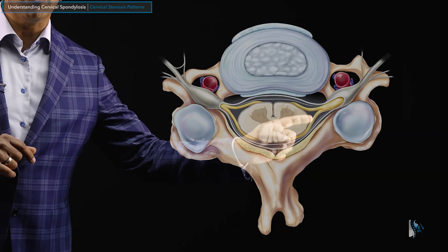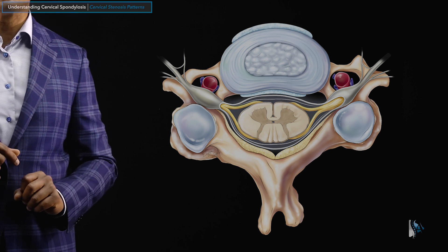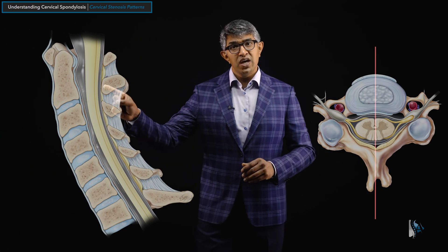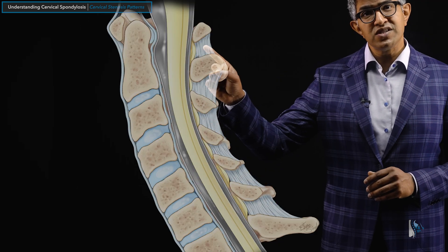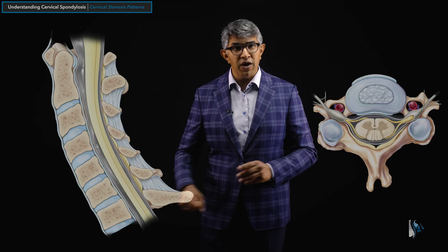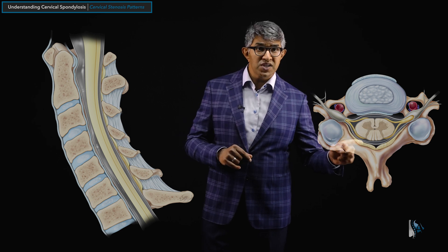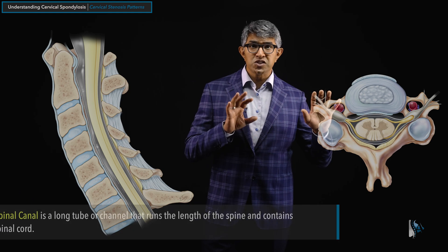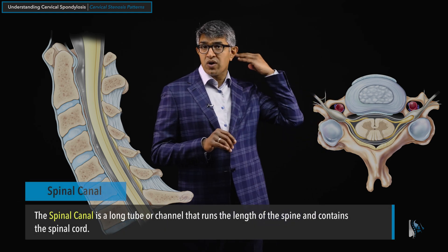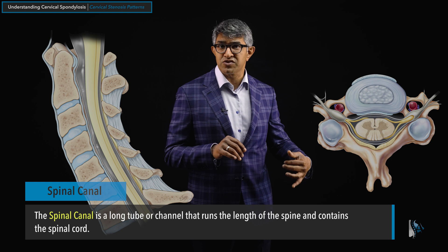There are two spaces we're going to talk about in the spine. One is called the spinal canal — that's the space the spinal cord runs in. If you take a sagittal slice, you can see the spinal cord running in a tube called the spinal canal. Looking at a cross-sectional slice, it looks like a cross section through a tube. The spinal canal runs from the base of your skull all the way down to your sacrum.